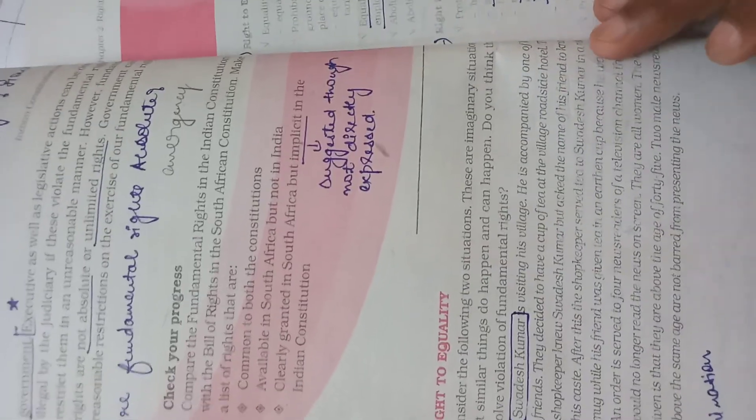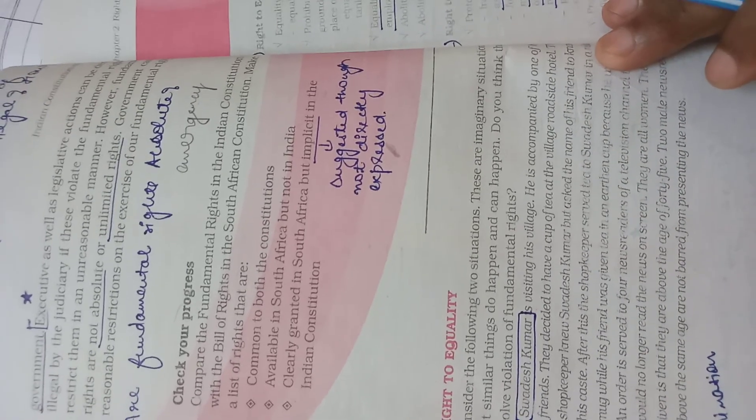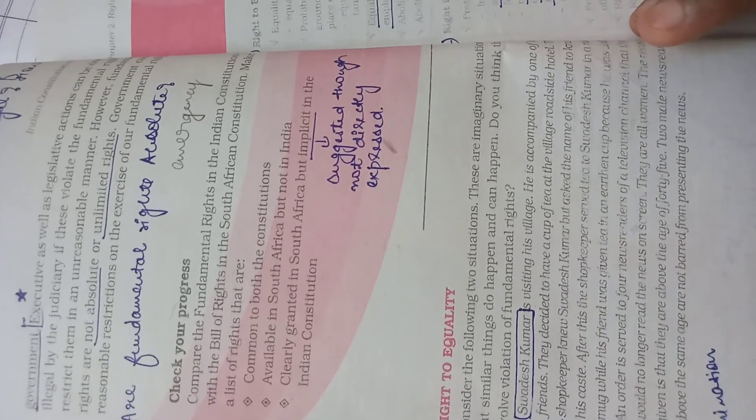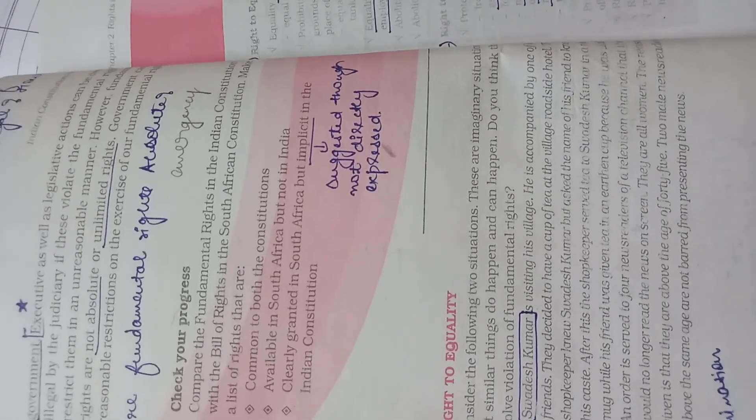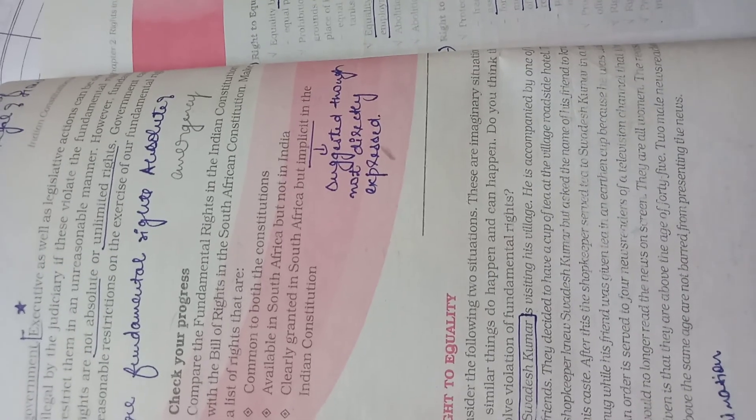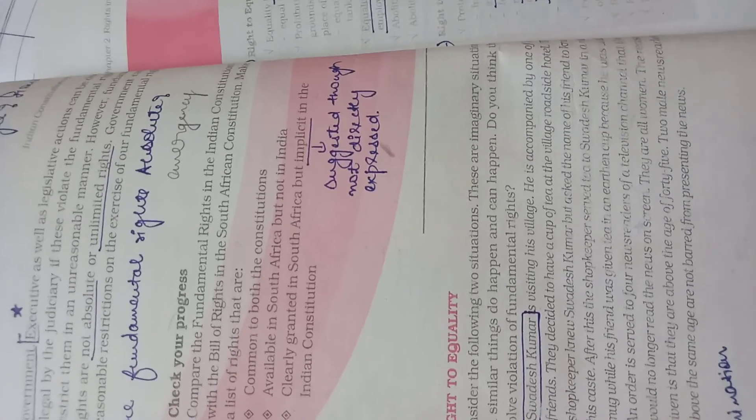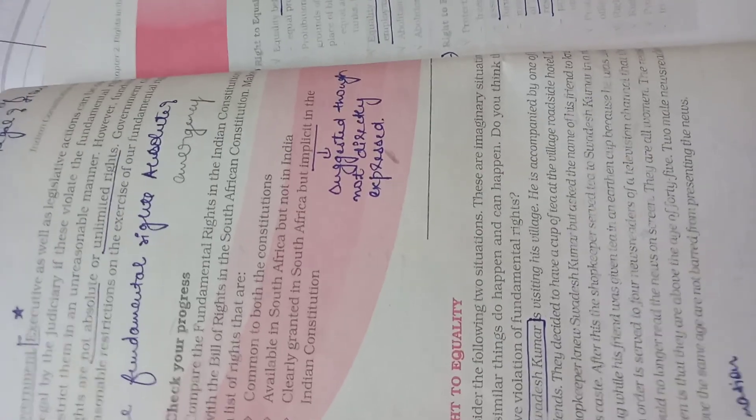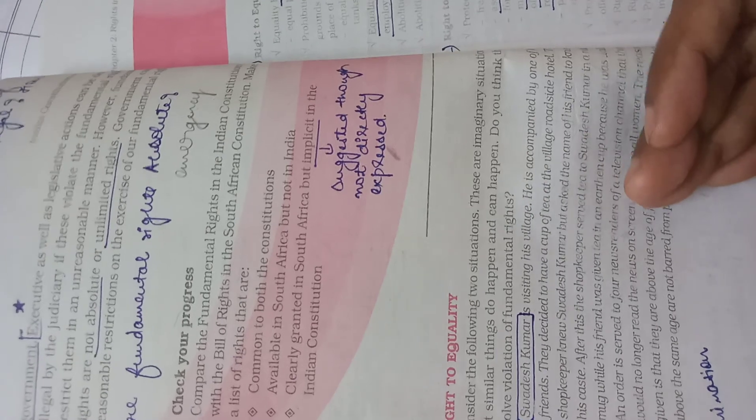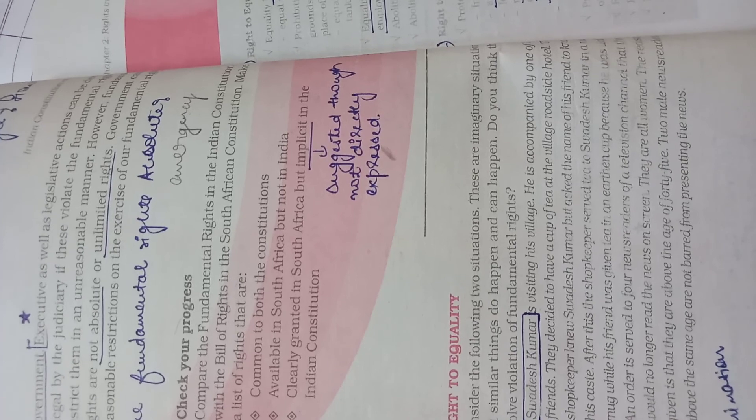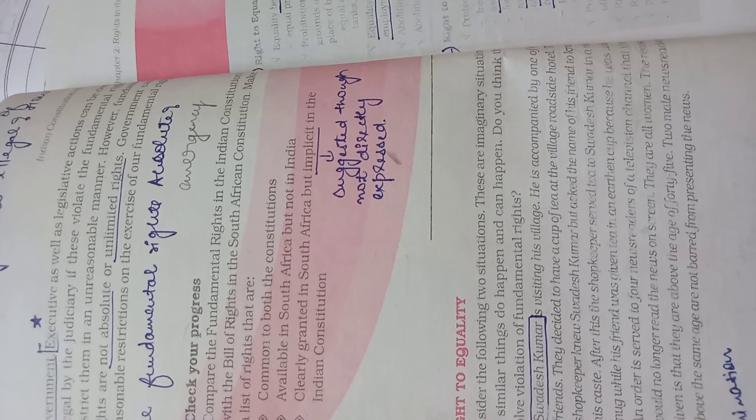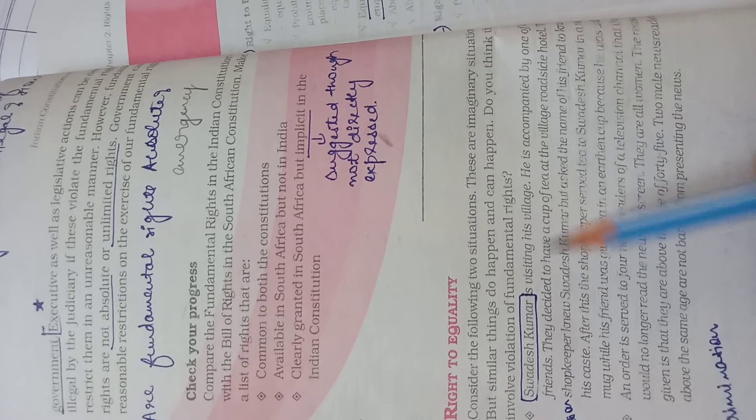What happens is that earthen cups usually you can discard, you can dispose of them. But if it is, for example, a steel cup, it can be washed and utilized again. So what is the thought process? That since you are a low caste, if someone will consume tea from the same cup, then it will pollute or ruin something like that.